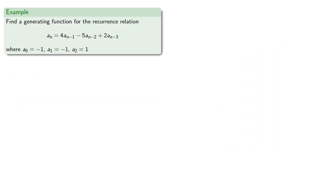So suppose we want to find a generating function for this recurrence relation, where we know a0, a1, and a2.